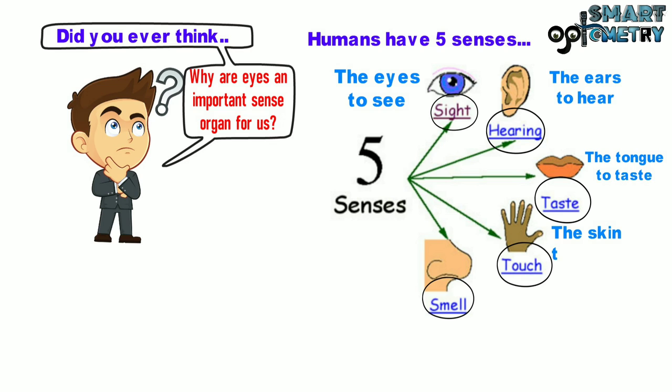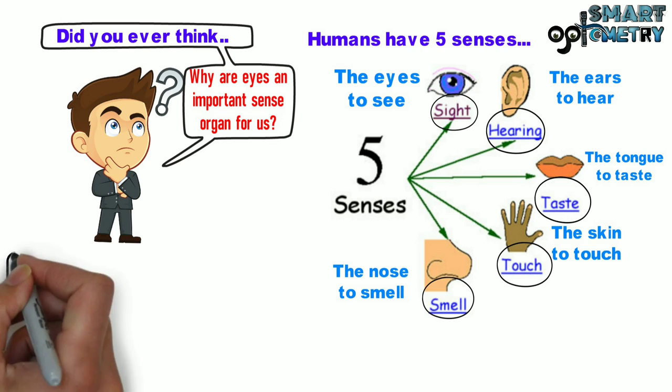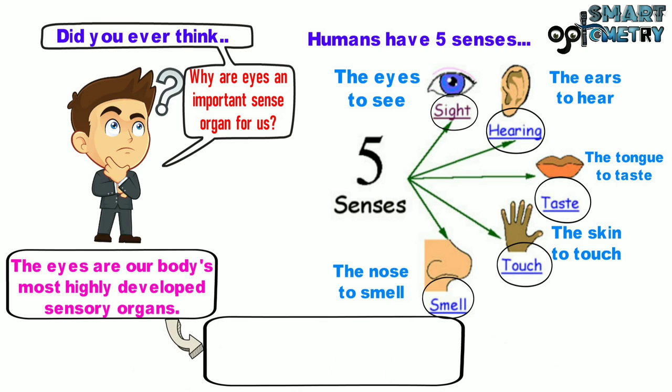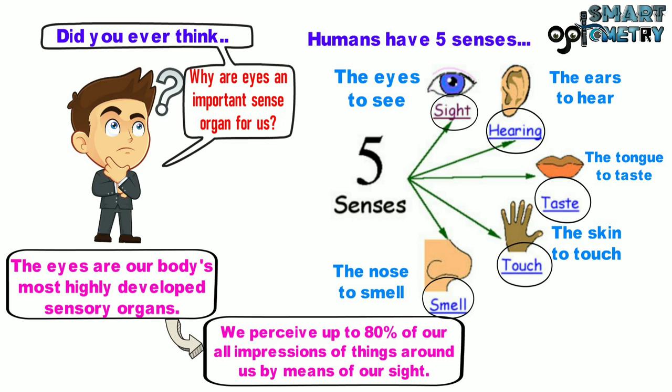The eyes are our body's most highly developed sensory organs. We perceive up to 80 percent of all our impressions of things around us by means of our sight.